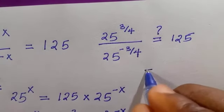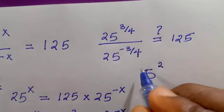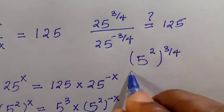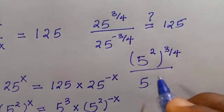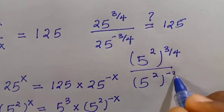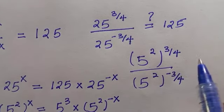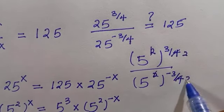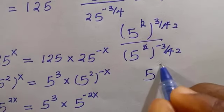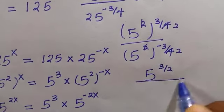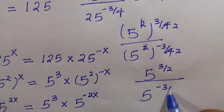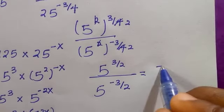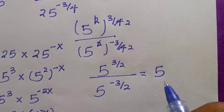If it equals 125, the value of x truly satisfies the problem. We know 25 is 5 raised to power 2, so we have 5 raised to power 2 all raised to power 3 over 4, divided by 5 raised to power 2 all raised to power minus 3 over 4. The 2 goes into 4 twice, giving 5 raised to power 3 over 2 divided by 5 raised to power minus 3 over 2. Applying the division law of exponents, we transfer the denominator up.